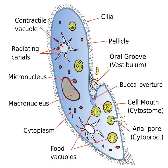Food is directed into the cytostome and sealed into vacuoles. Only certain groups of protozoa, such as the ciliates and excavates, have cytostomes.